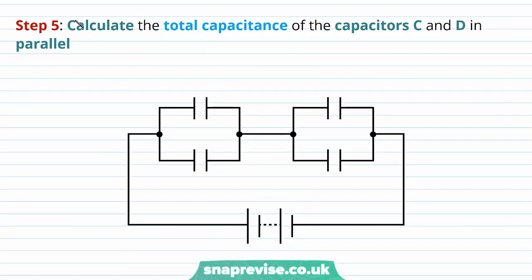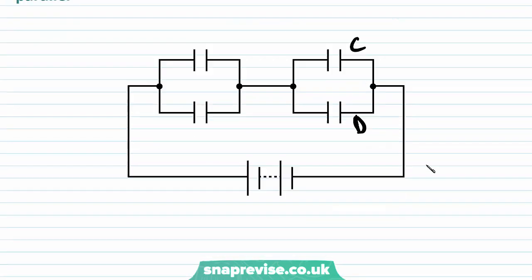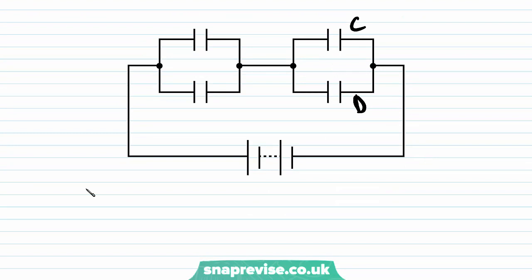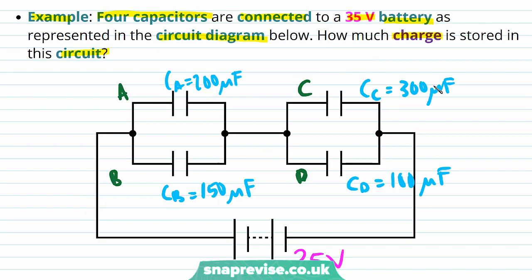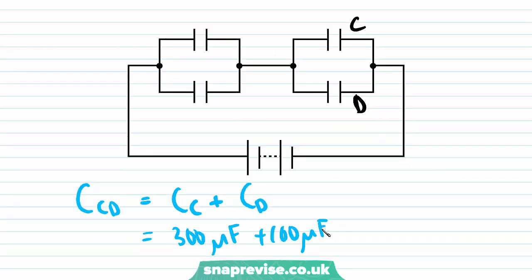Step 5: calculate the total capacitance of capacitors C and D in parallel. We call this CCD = CC + CD = 300 µF + 100 µF = 400 µF.